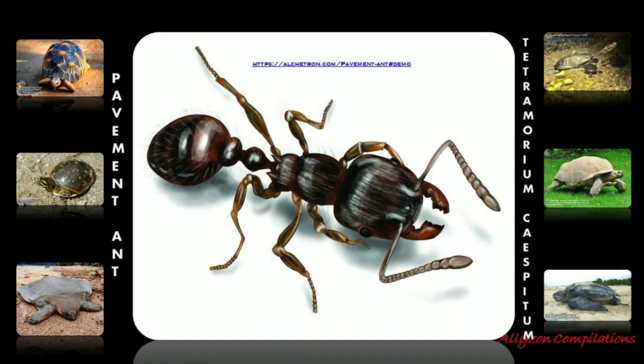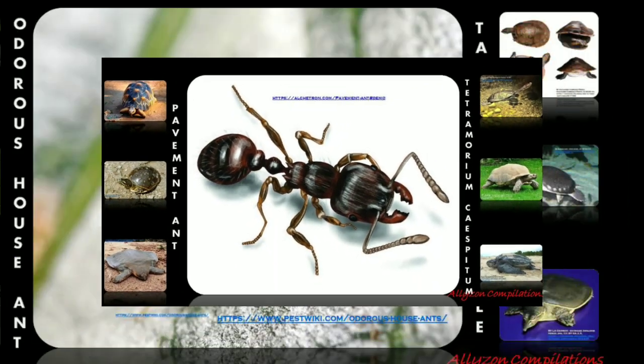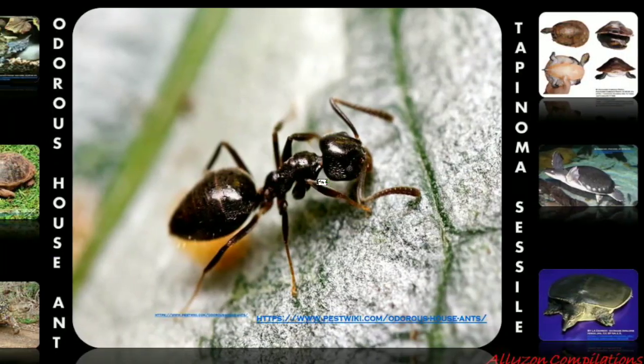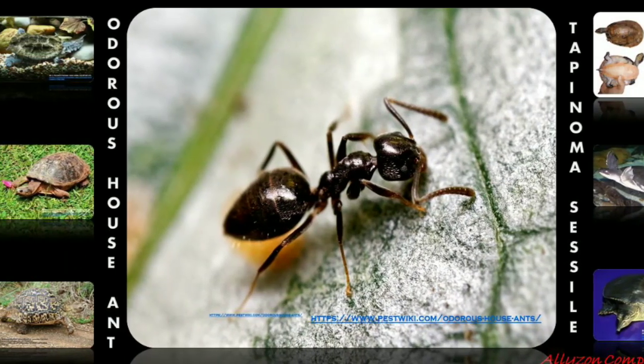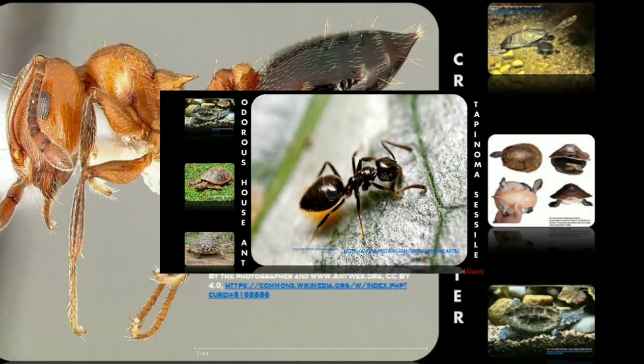Ant colonies also have soldier ants that protect the queen, defend the colony, gather or kill food, and attack enemy colonies in search for food and nesting space.